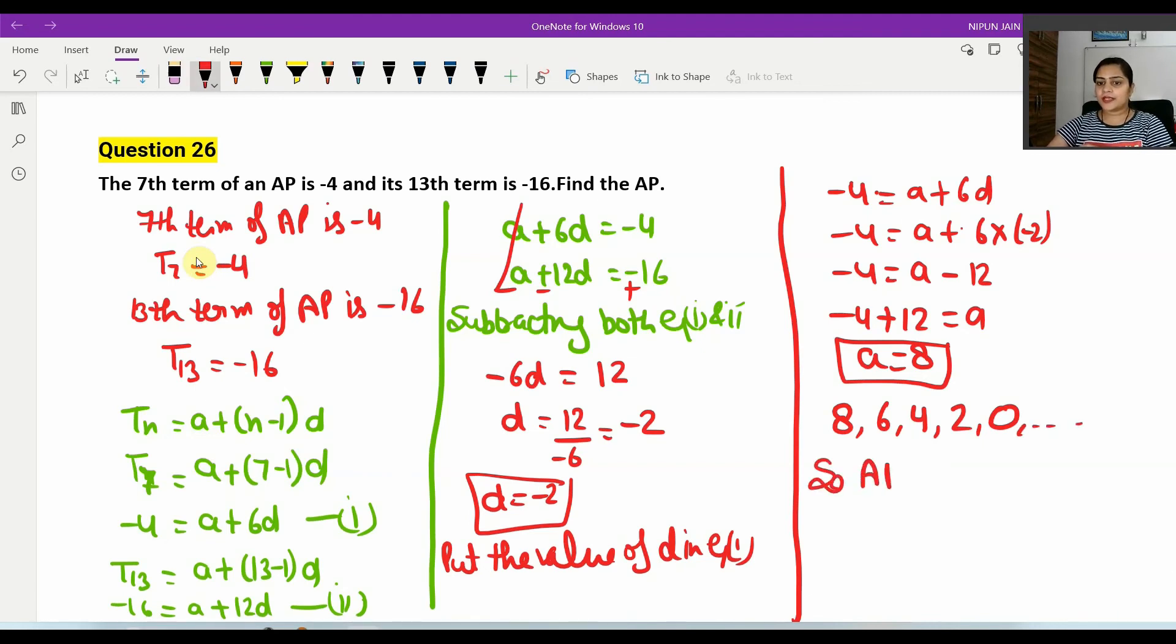So the AP is 8, 6, 4, 2, 0, and the sequence will continue. Next will be minus 2, minus 4, minus 6, and so on. This is how your question is solved. It's a very simple question.